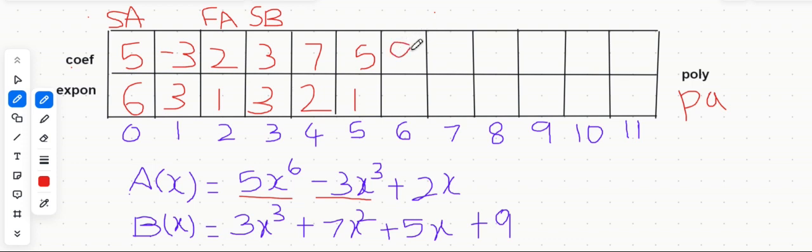The last term is 9. You don't have an x here, which indicates x^0, so the exponent here is 0. Now we have reached the end of polynomial B, so we are going to represent it as FB, finish.